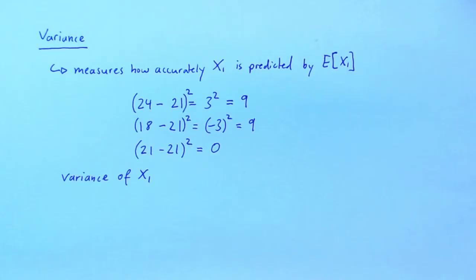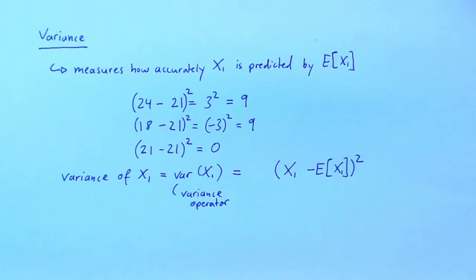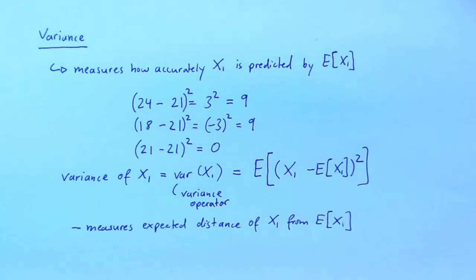To indicate that we are computing the variance of a random variable, we use the variance operator. The variance is based on the squared difference between x1 and its expectation. This is a transformation of a random variable, so it is in turn a random variable — a random quantity. To reduce this random quantity to a single number, we take its expectation. As you can see, the variance measures the expected distance of a random variable from its expectation. A variance is always a single number and is always non-negative.